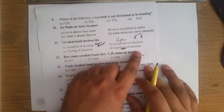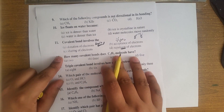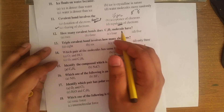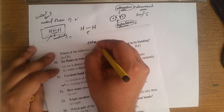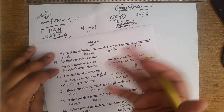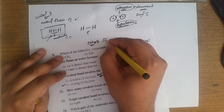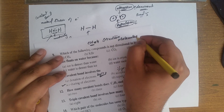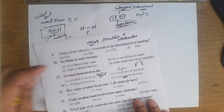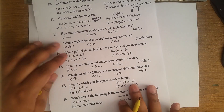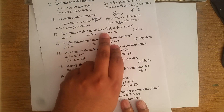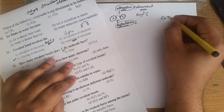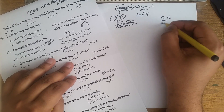The option 'repulsion of electrons' is a wrong answer for this MCQ — the right answer is option C. Now let's talk about the structure of molecules. How many covalent bonds does acetylene have? Acetylene is a molecule containing two carbon atoms.